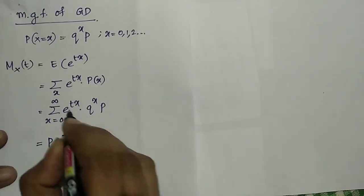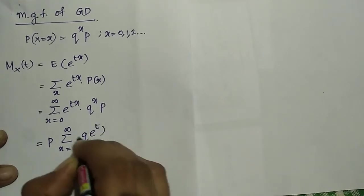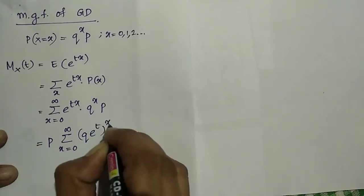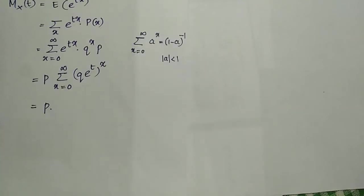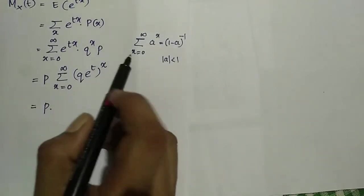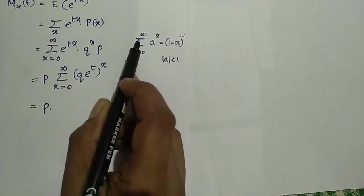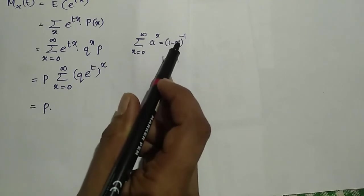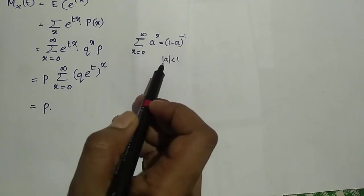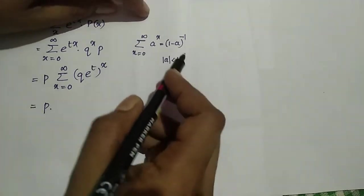This equals p summation from x equal to 0 to infinity, where these terms can be written as (q e raised to t) raised to x. We have the result: summation over x equal to 0 to infinity of a raised to x equals (1 minus a) raised to minus 1, whenever mod a is less than 1.